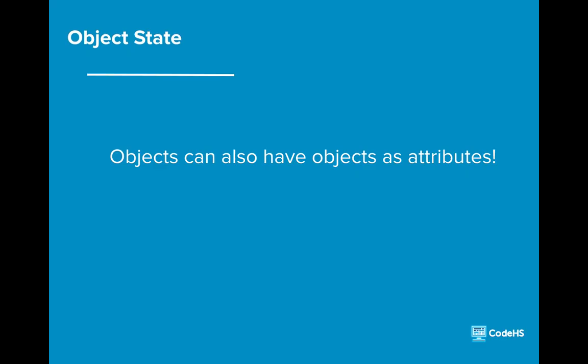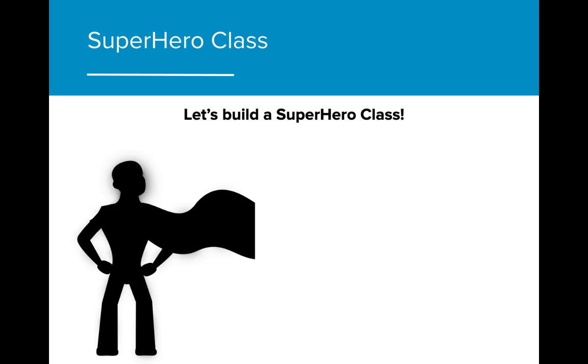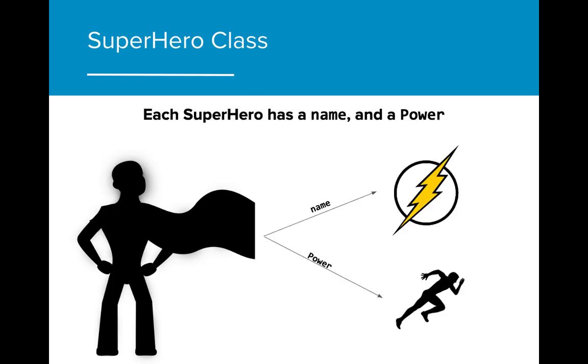In this lesson, we will take a deeper look into creating constructors that take objects as a formal parameter. In order to do that, we will be creating a couple of example classes. For this lesson, we're going to build a superhero class. Each of our superheroes will have a name and a power. These are the attributes that we expect each of our superheroes to have, and thus will be our instance variables.